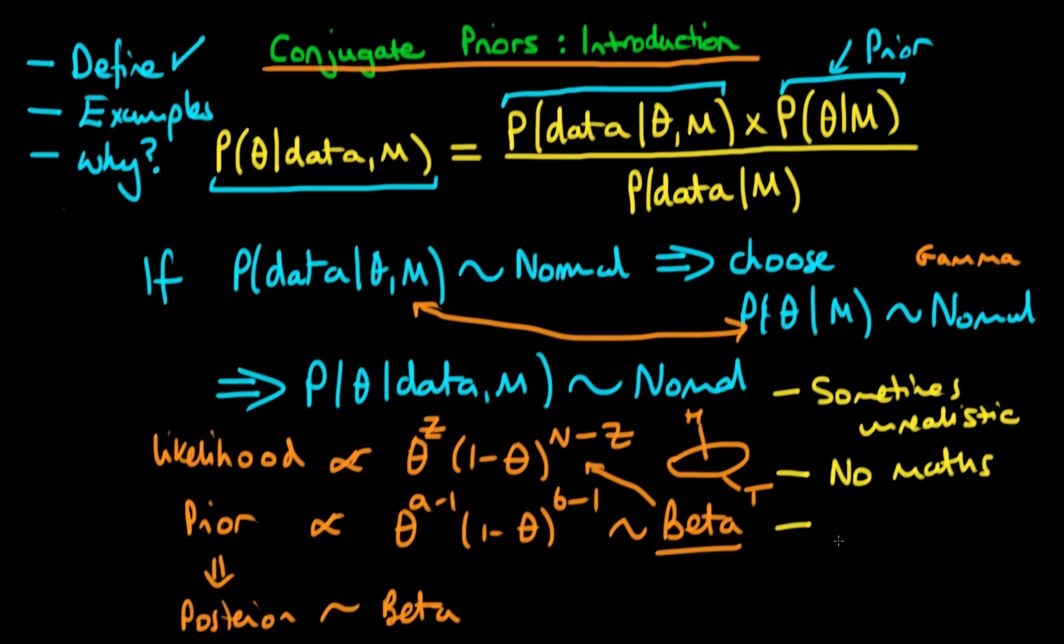Another benefit to choosing a conjugate prior is that we can actually generate the posterior exactly. And this is really beneficial, because we don't actually need to use any numeric or computational method to sample from that posterior distribution. We can just derive its analytic form. So that's definitely a benefit.